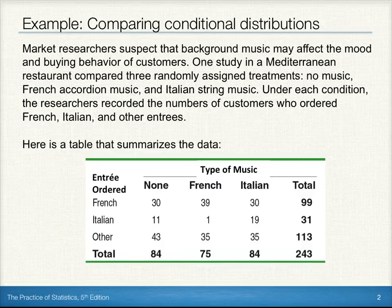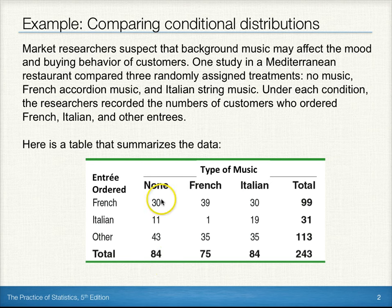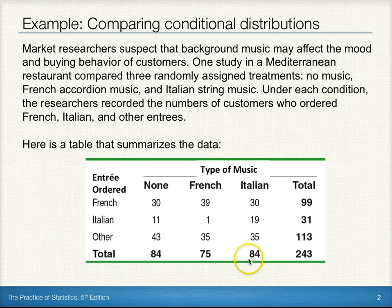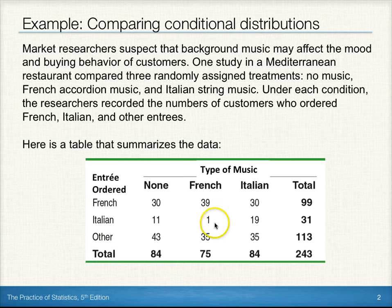Here's a table that summarizes the data. When no music was played there were 84 customers, of which 30 ordered a French entree, 11 ordered Italian, and 43 ordered some other type of food. 75 customers ordered under French music, and 84 customers ordered while Italian music was playing. We can see the number of entrees ordered under each type of music as well.